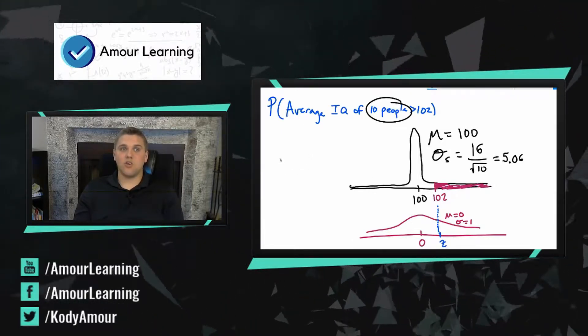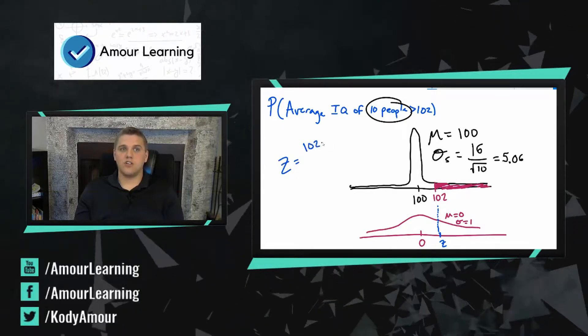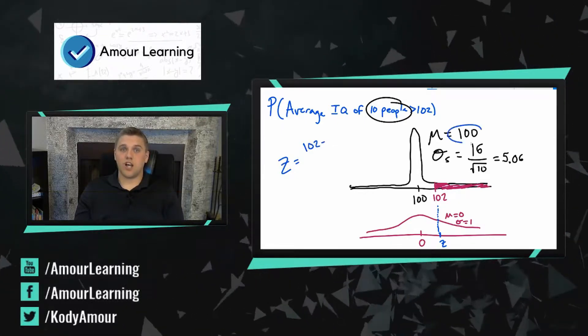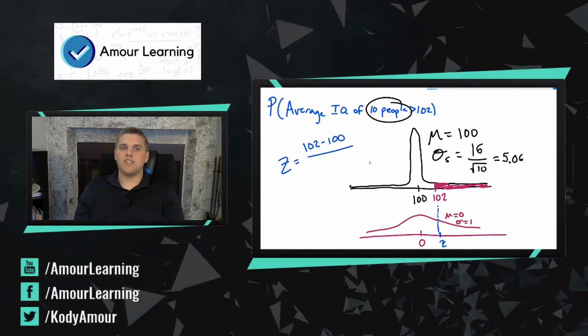Well we can calculate that z-score using this formula: z equals x, which in this case is 102, minus my average which is 100, divided by my standard deviation.